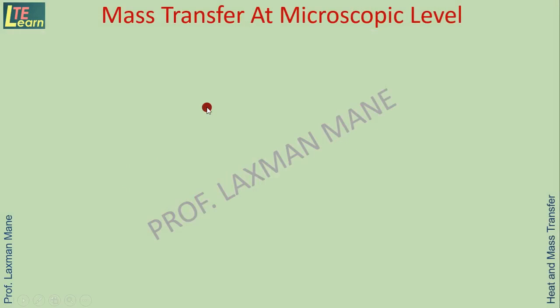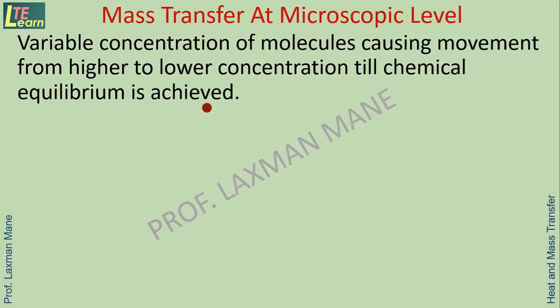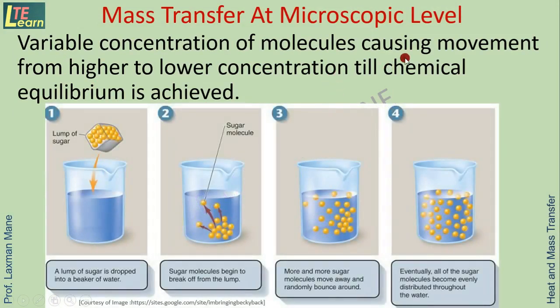At microscopic level, mass transfer, you see variable concentration of molecules causing movement from higher to lower concentration till chemical equilibrium is achieved.